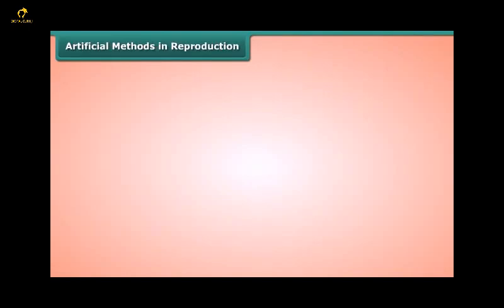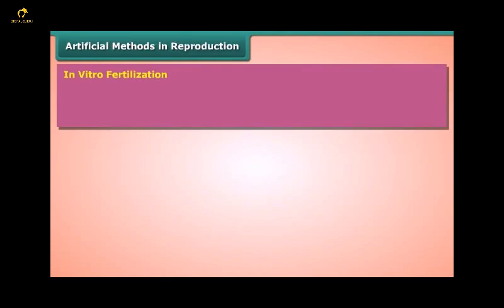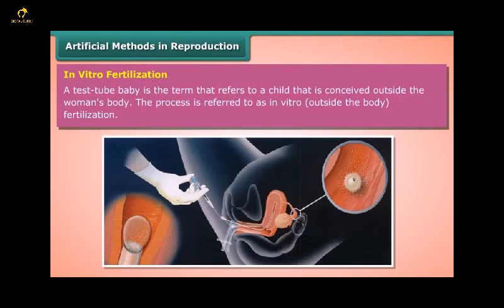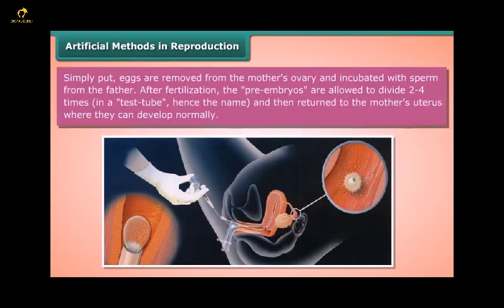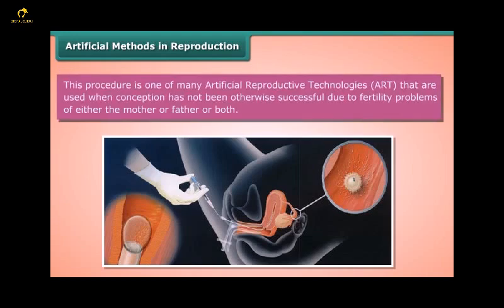Artificial Methods of Reproduction – In Vitro Fertilization (IVF): A test-tube baby refers to a child conceived outside the woman's body through in vitro fertilization. Eggs are removed from the mother's ovary and incubated with the father's sperm. After fertilization, the pre-embryos are allowed to divide two to four times in a test tube and are then returned to the mother's uterus to develop normally. This is one of many artificial reproductive technologies (ART) used when conception has not been otherwise successful due to fertility problems in either or both parents.